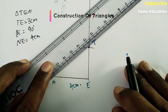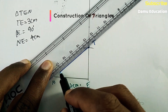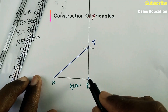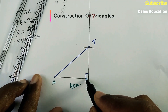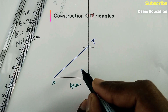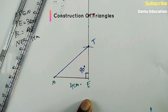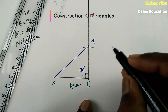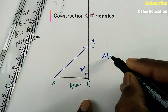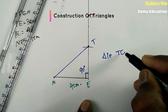Join T and N. The angle at E is 90 degrees, which you can mark with a right angle symbol. Triangle TNE is now constructed.